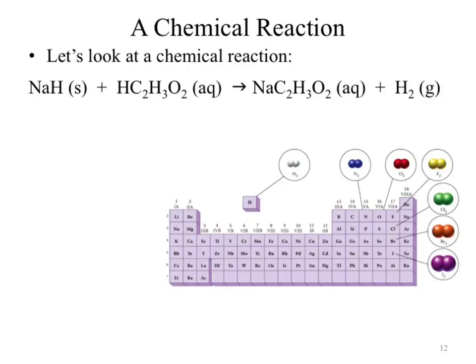Within a chemical reaction — let's describe this one. Solid sodium hydride is reacted with acetic acid to produce aqueous sodium acetate and hydrogen gas. What did you have to pull back into the reaches of your brain to do that? Nomenclature. You can't forget your nomenclature — you will be using it again and again.